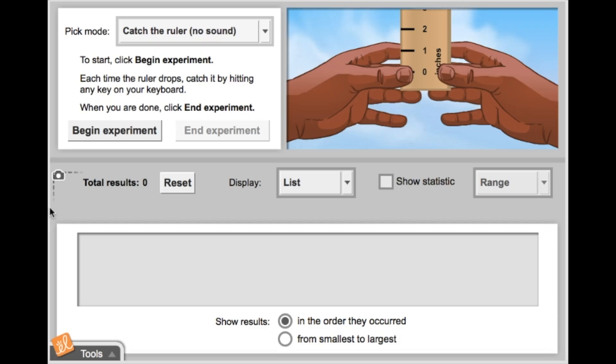In the Reaction Time 1 gizmo, we can measure reaction time and then calculate the range, mode, median, and mean of your data. Data can even be displayed on a list, table, bar graph, or dot plot. Let's jump right in and start experimenting.